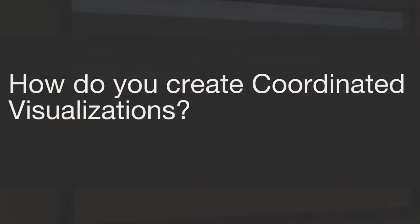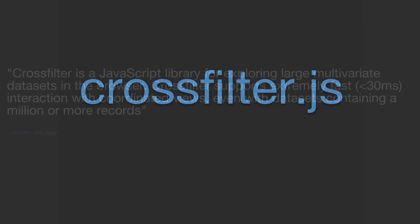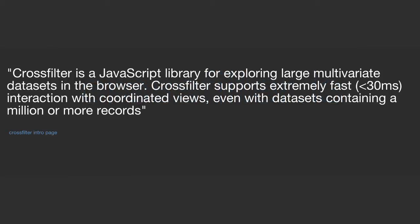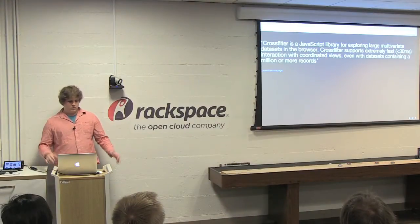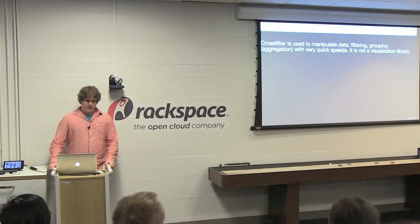Now you understand what coordinated visualizations are — how can we create them? This is the Bay Area D3 user group, so I'm going to talk about Crossfilter, which was a project that Square created while Mike Bostock, the creator of D3, was at Square — created for Square Analytics. Crossfilter is a JavaScript library for exploring large multivariate datasets in the browser. Extremely fast interactions are supported with coordinated views and it works with millions of records. Crossfilter is used to manipulate data by filtering and grouping — which is a type of aggregation — with very quick speeds. It is not a visualization library.